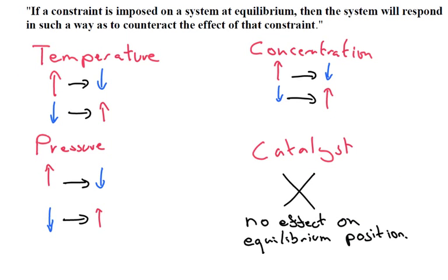Here's a formal definition of Le Châtelier's Principle: if a constraint is imposed on a system at equilibrium, then the system will respond in such a way as to counteract the effect of that constraint. For example, you could change the temperature, the pressure, the concentration, or you could introduce a catalyst.